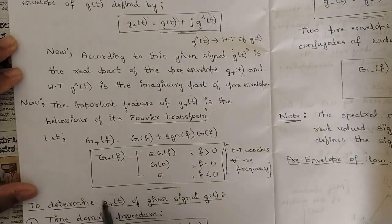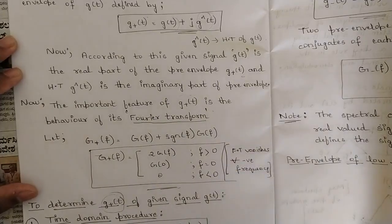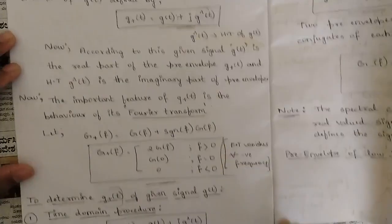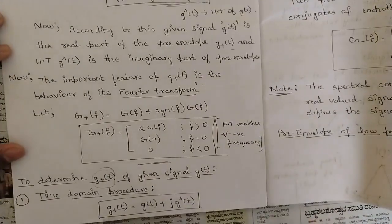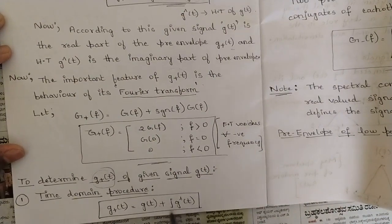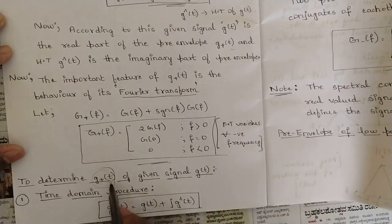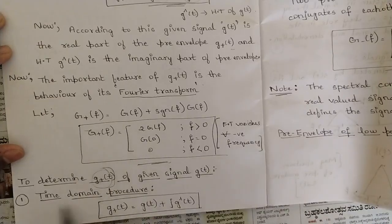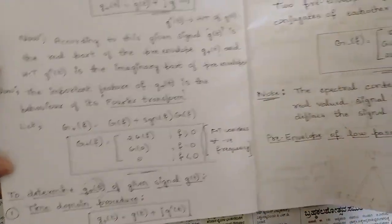To determine G+(t) — the pre-envelope in the time domain — of the given signal G(t), the time domain procedure gives: G+(t) is equal to G(t) plus j·Ĝ(t). This is the formula you should keep in mind for determining G+(t) in the time domain.